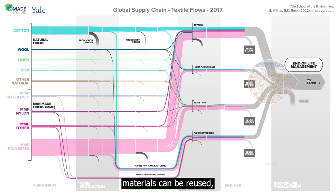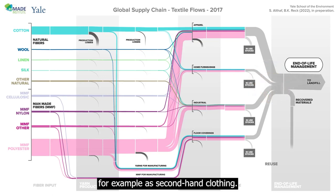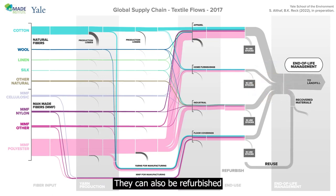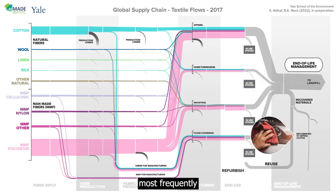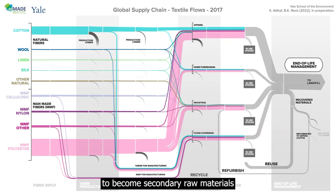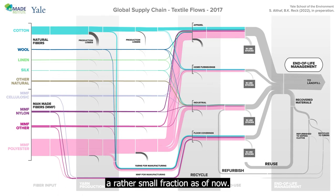Recovered materials can be reused, for example as second hand clothing. They can also be refurbished, most frequently to become wiping clothes for industrial applications, or they can be recycled to become secondary raw materials in carpet manufacturing — a rather small fraction as of now.